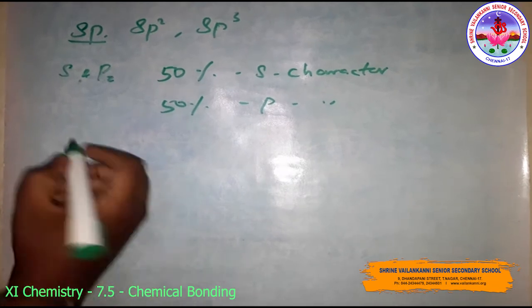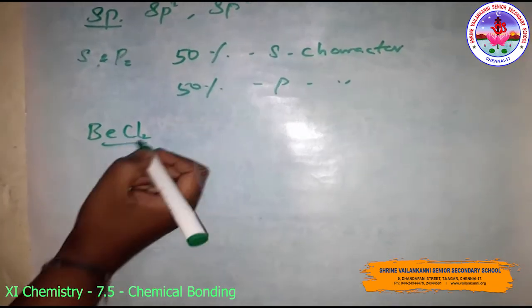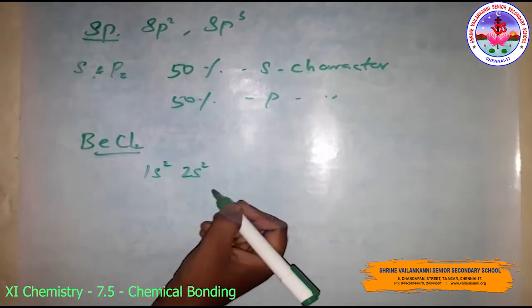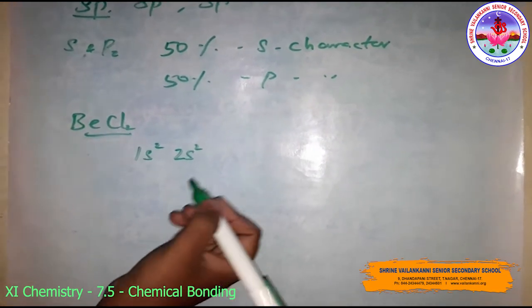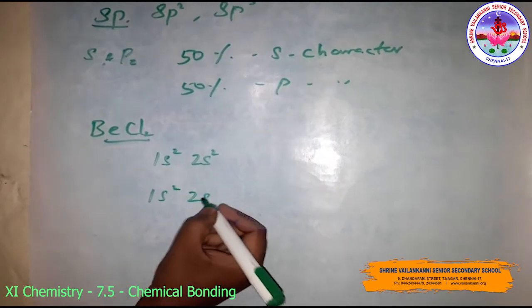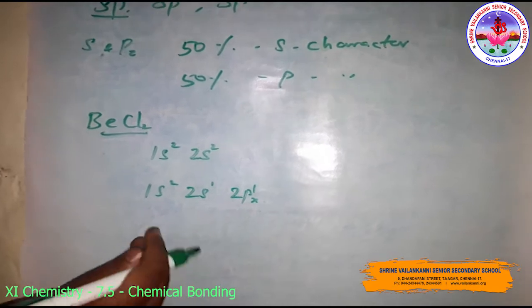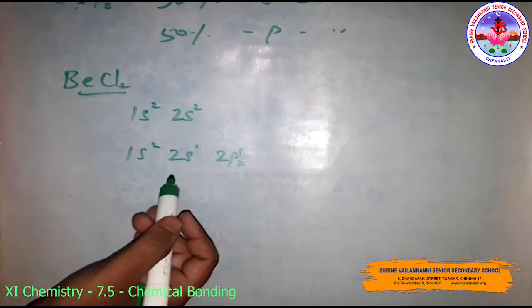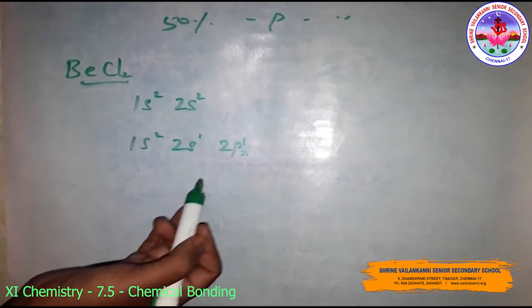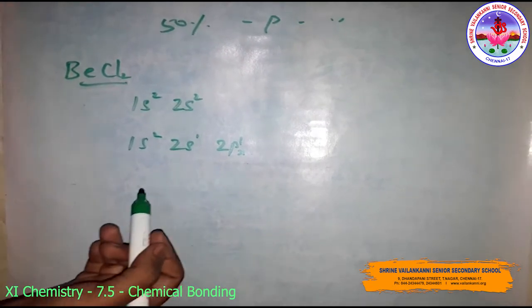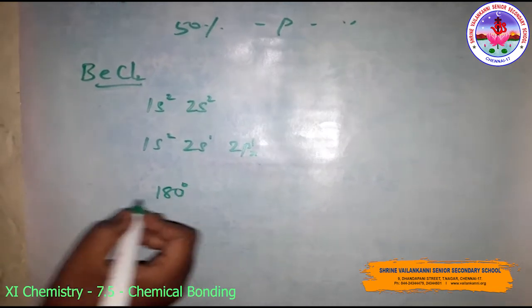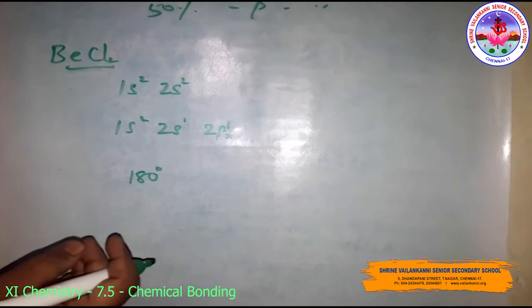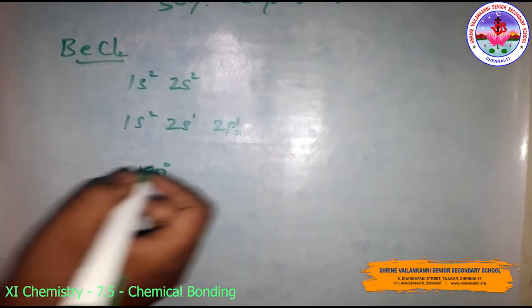An example of sp hybridization is beryllium chloride, BeCl2. The ground state electronic configuration of beryllium is 1s2 2s2. In the excited state, one 2s electron is promoted to the 2p orbital, giving 1s2 2s1 2p1x, to account for its bivalency. The one 2s and one 2p orbital then hybridize to form two sp hybrid orbitals oriented in opposite directions at a 180-degree angle. Each sp hybrid orbital overlaps axially with the 2p orbital of chlorine to form two Be–Cl sigma bonds.